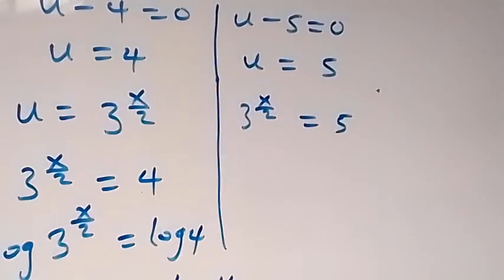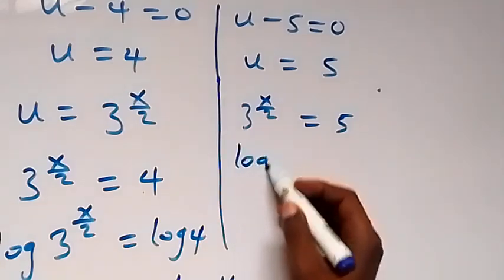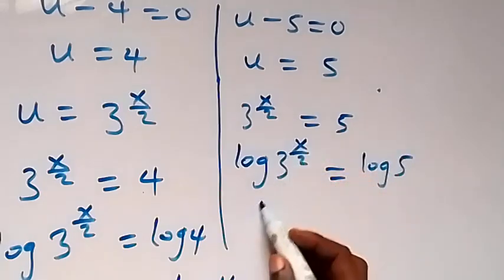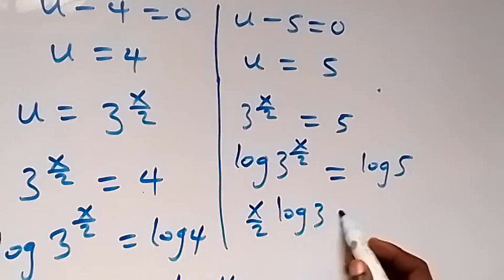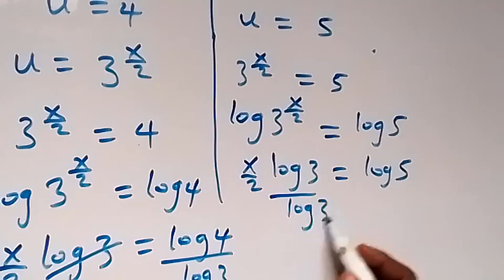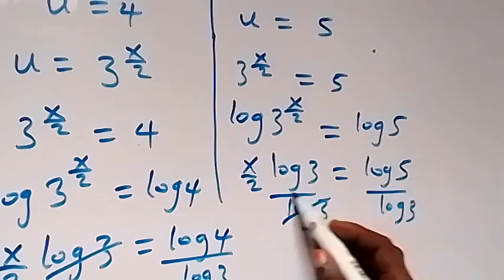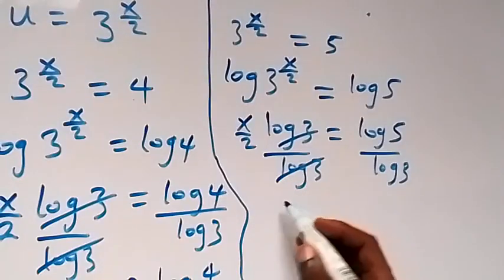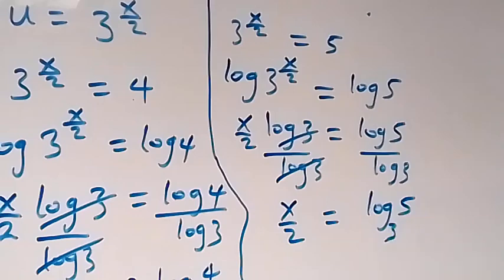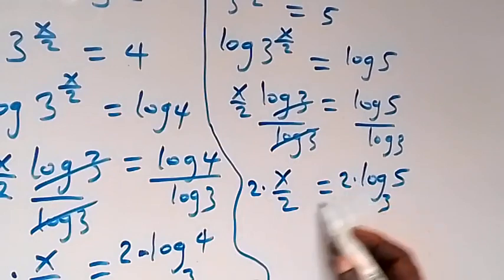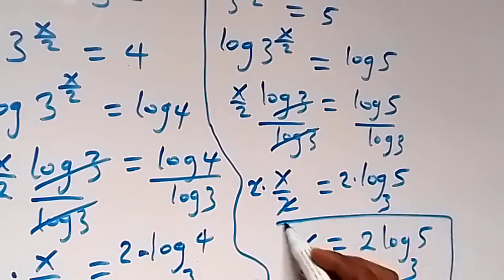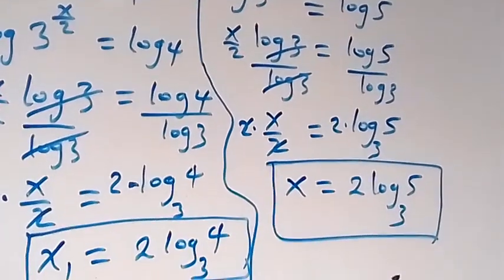For the second case, we take the log on both sides: log of 3 raised to power x over 2 equals log 5. From the power law, x over 2 times log 3 equals log 5. Dividing both sides by log 3 and applying change of base gives x over 2 equals log 5 to base 3. Multiplying both sides by 2, x₂ equals 2 log 5 to base 3.